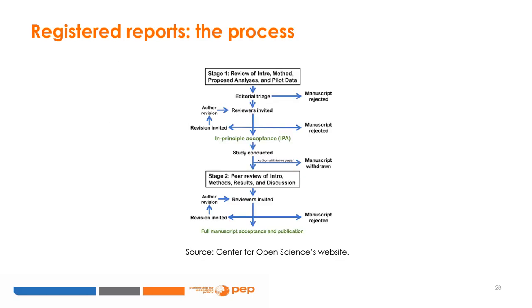Here is a diagram that illustrates the process from an RR to its publication. Compared to a standard publication process, there is the in-principle acceptance stage, akin to a conditional acceptance. Here, the in-principle acceptance occurs before the study findings are even produced, based on the relevance of the research question, the potential contribution of the paper, and the rigour of the research design. Note that even with an in-principle acceptance, the PI can withdraw the article at a later stage. More importantly, an in-principle acceptance ensures that, regardless of the study findings, the study will be published on the condition that the researchers followed the initial plan described in the RR and justify any deviation from it.